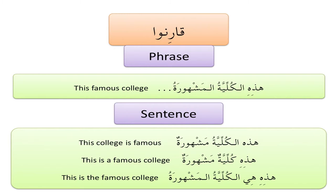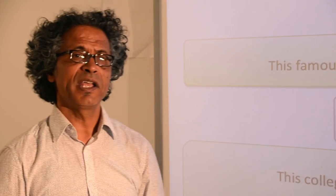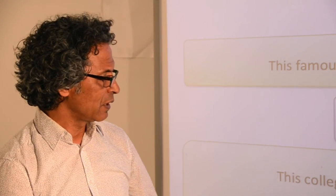In this next example, 'this is a famous college' is achieved by هَذِهِ كُلِّيَّةٌ مَشْهُورَةٌ — in this جملة اسمية, هَذِهِ is المبتدأ, acting as the subject, and كُلِّيَّةٌ مَشْهُورَةٌ is الخبر, the predicate. The last sentence is quite emphatic: هَذِهِ هِيَ الْكُلِّيَّةُ الْمَشْهُورَةُ — as if you're saying, 'not that one, not the other one — this is the famous college.'